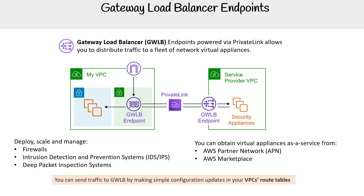You can send traffic to the gateway load balancer by making a simple configuration update in your VPC route tables, since you'll need to tell it to route to the gateway load balancer.